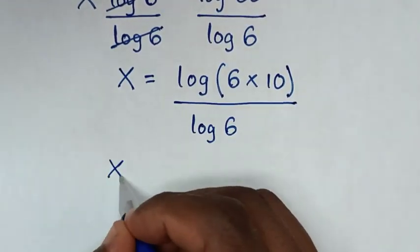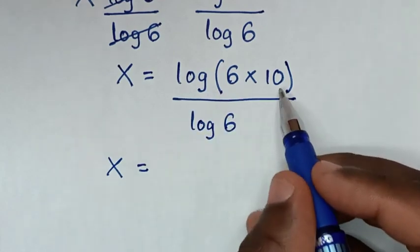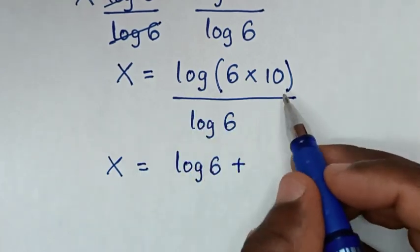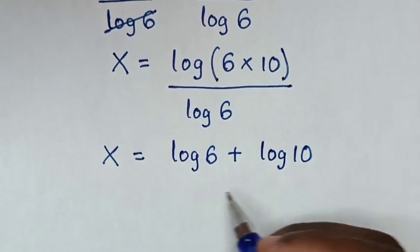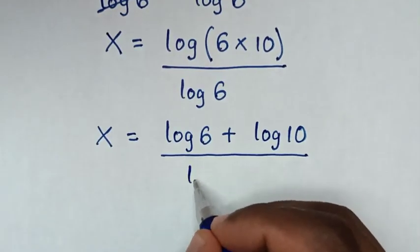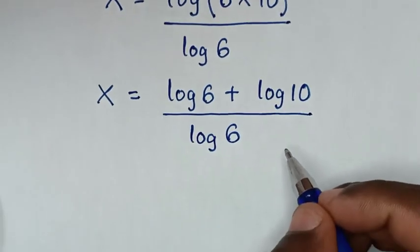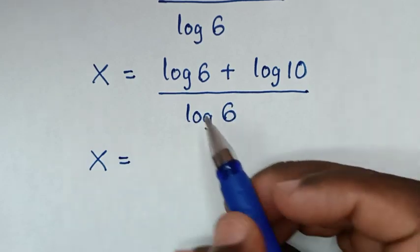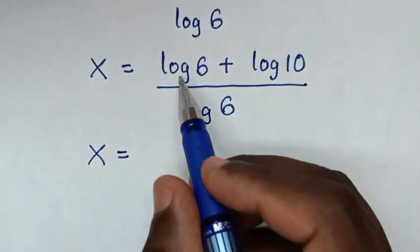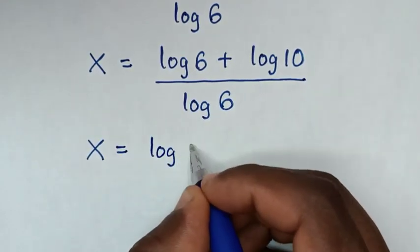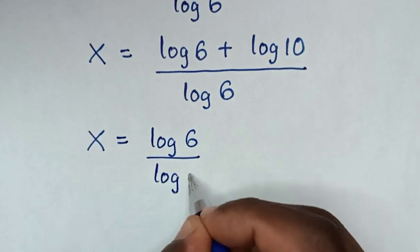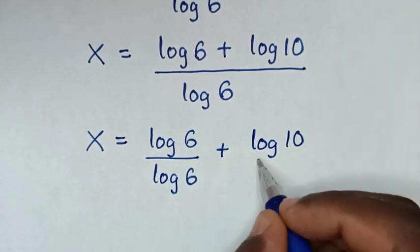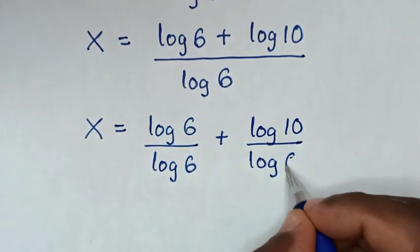Then x is equal to log of 6 times 10, which is the same as log of 6 plus log of 10, all over log of 6. We then take log of 6 divided into each part, giving log of 6 over log of 6, then plus log of 10 over log of 6.